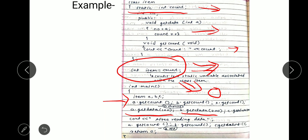By executing the second call the value of count gets incremented to two, and by executing the third call it gets incremented to three, independent of the object. We have three objects — a, b, and c — which are three objects of class atom. The count variable is shared between these objects, so the value never decrements. It starts from zero and goes to one, two, three. After that, the value of count for each object — a.getCount, b.getCount, and c.getCount — is three.